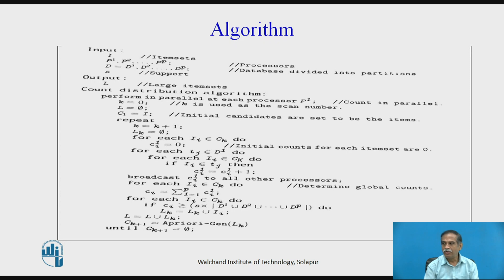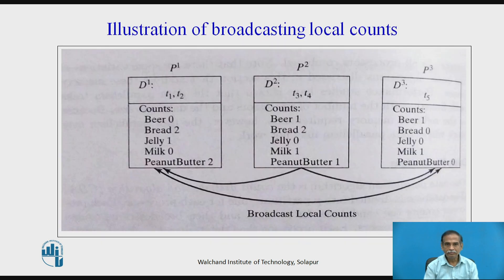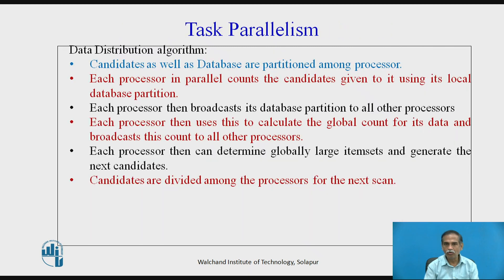We then merge all the counts to determine a global count. This is illustrated for partitions p1, p2, and p3 of the database d1, d2, and d3. The local counts are broadcast and merged to find the global count.